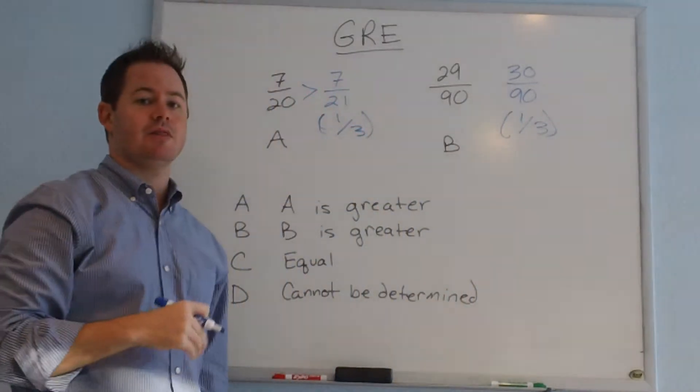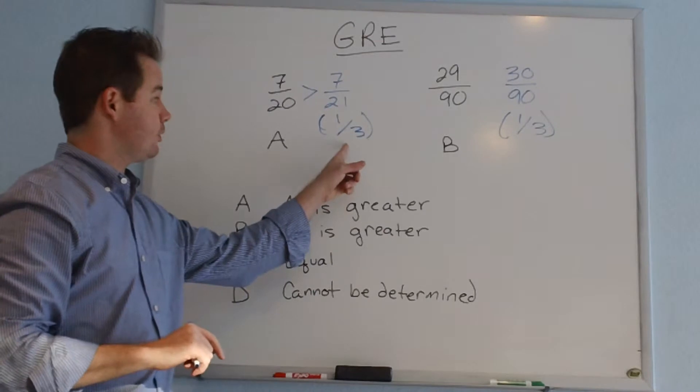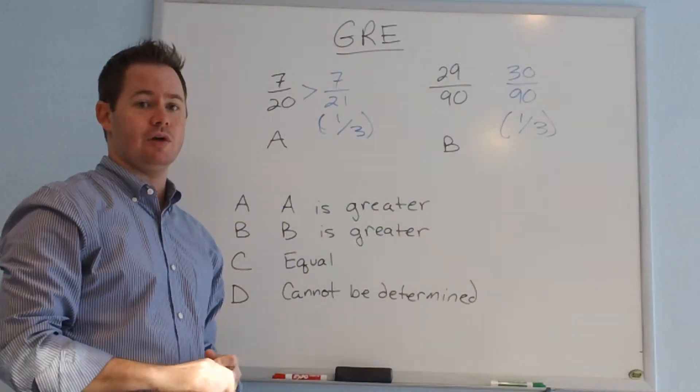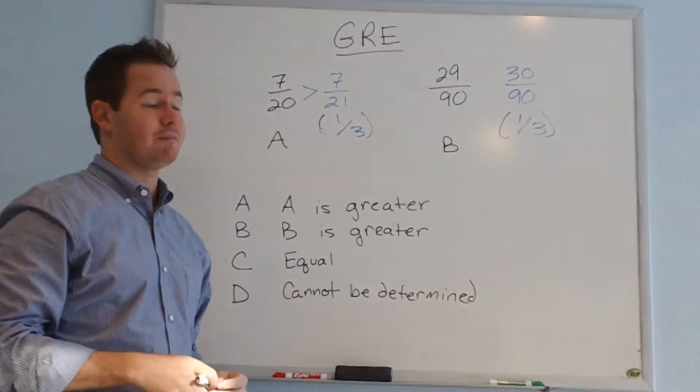We have the same reference value for both questions. We're comparing each one to a common value of 1 third, and it makes it easier to compare both columns to each other.